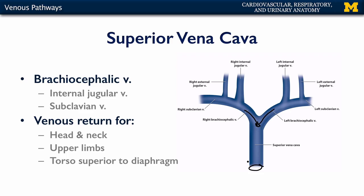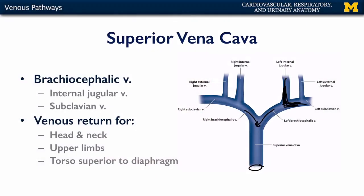Each brachiocephalic vein is created by the junction of the internal jugular vein with the subclavian vein. Where the internal jugular vein meets the subclavian vein, we refer to this as the venous angle. You may recall that it's in the vicinity of the venous angle where the ducts and trunks of the lymphatic system drain. There are also external jugular veins, which feed into the subclavian vein.